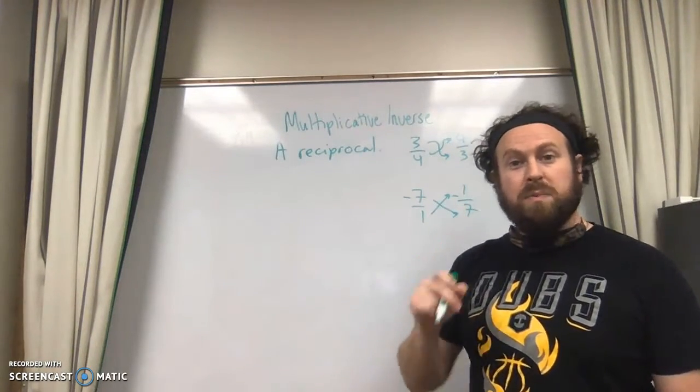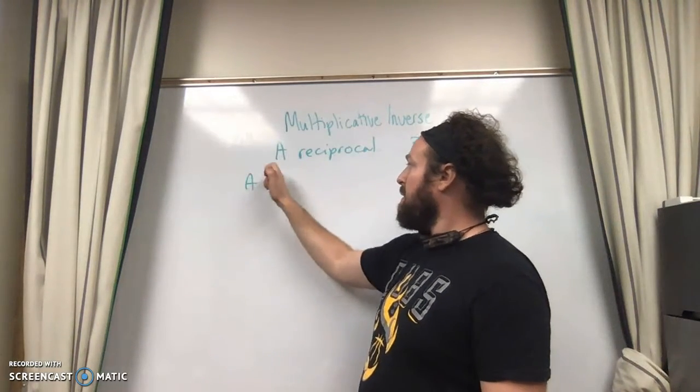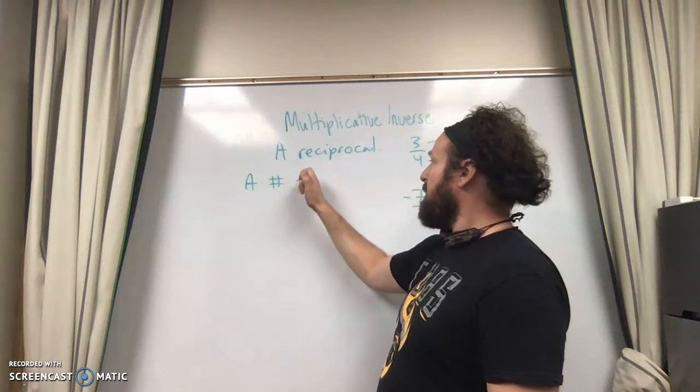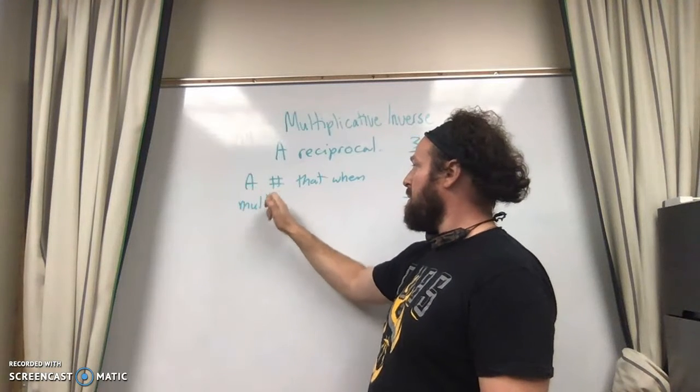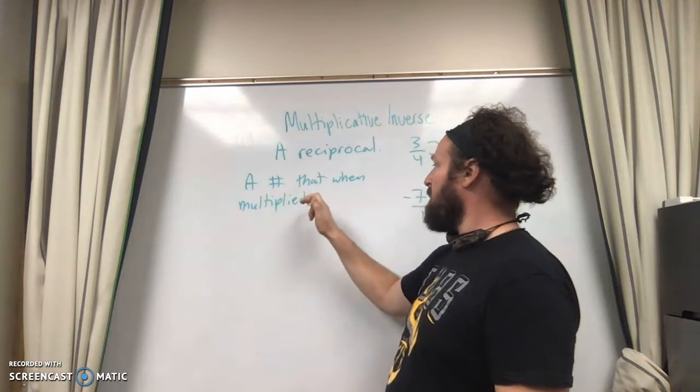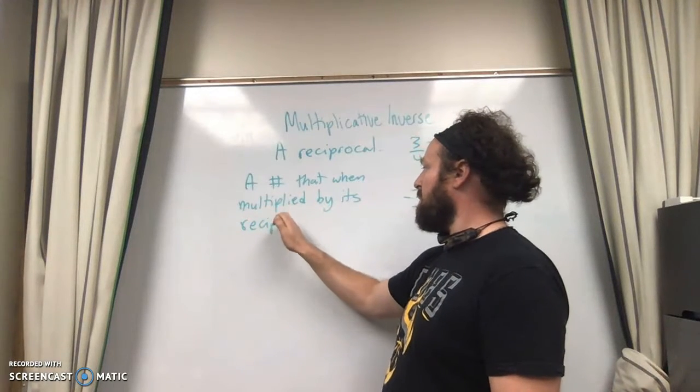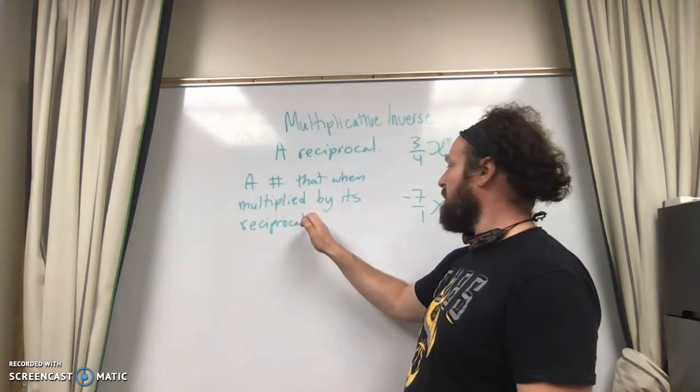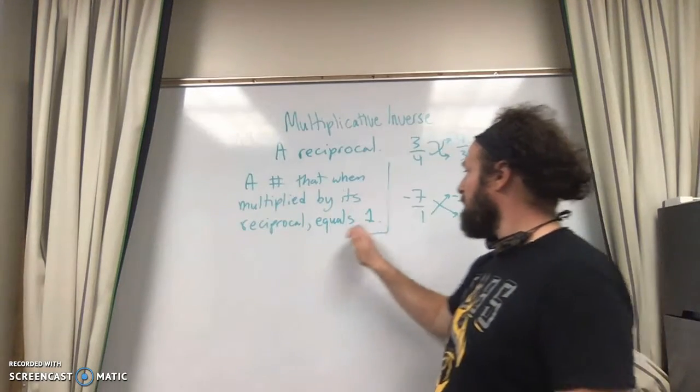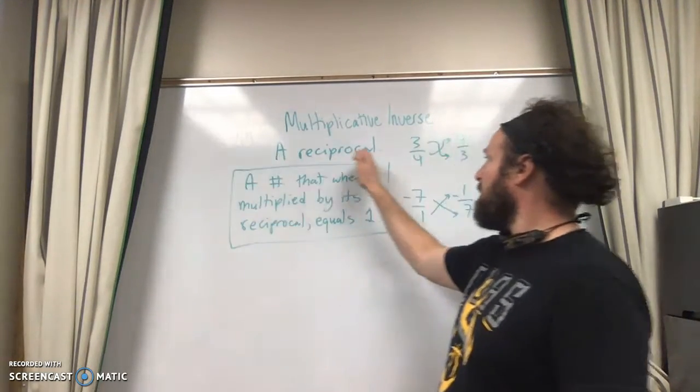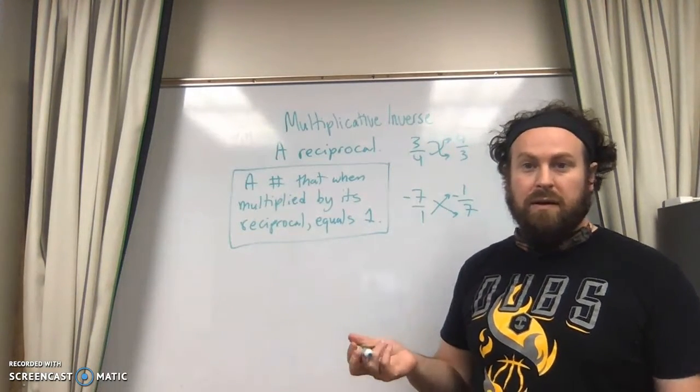To be more specific, a multiplicative inverse, or a reciprocal, is a number that when multiplied by its reciprocal equals 1. The multiplicative inverse is a number that when multiplied by its reciprocal equals 1.